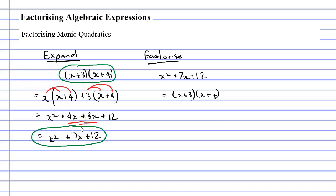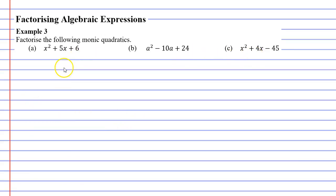If you look at the middle term, it has a 7. If you look at the last term, it has a 12. And if you look closely, the 3 and the 4 can make both 7 and 12. If we add 3 and 4, we get 7. If we multiply 3 and 4, we get 12. So these two numbers add to give the number in the middle term and multiply to give the number in the last term. Let's use this knowledge to factorize the following three expressions.